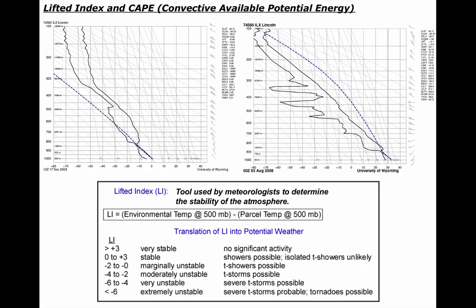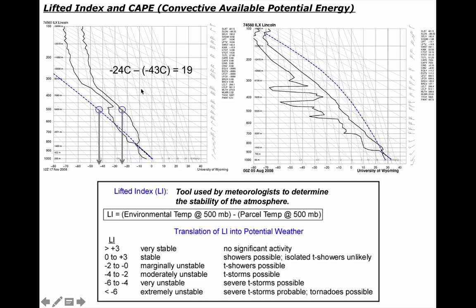Let me show you some real data. On the upper left, I have a sounding from Lincoln, Illinois, early in the morning on November 17, 2008. The parcel line is the dashed blue line. The lifted index is the environment temperature at 500 millibars minus the parcel temperature at 500 millibars. The environment is minus 24, the parcel is negative 43. So negative 24 minus negative 43 is a lifted index of 19. Anything greater than positive 3 is very stable — no significant weather activity. This is a crisp, boring fall day.